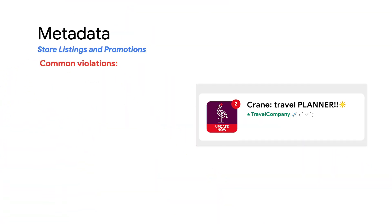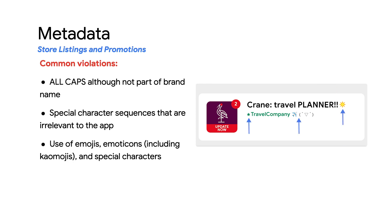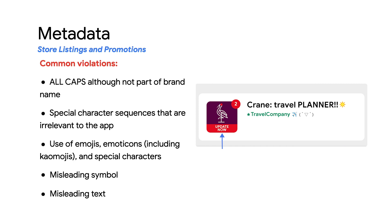Here are some examples from the app icon, title, and developer name section. This app has the word 'planner' in all caps, even though it is not part of the brand name. Second, it includes special character sequences — for example, consecutive exclamation points that are irrelevant to the app. Third, it uses emojis, emoticons, including commogies, and special characters. Next, it also uses a misleading symbol — the new message dot indicator at the upper right section of the icon — when there are no new messages. Lastly, it includes misleading text that says 'Update Now.' Please take note that these are not allowed.